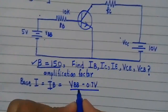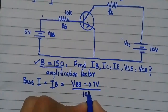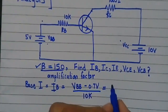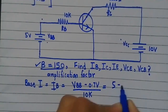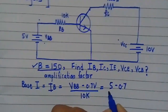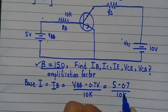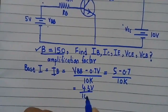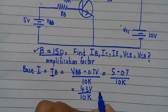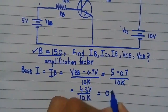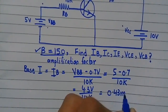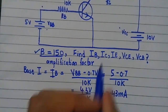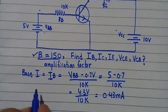Therefore we write: Ib = (Vbb − 0.7 V) / Rb = (5 V − 0.7 V) / 10 kΩ = 4.3 V / 10 kΩ = 0.43 mA. This is the base current. Now we have to find the collector current.